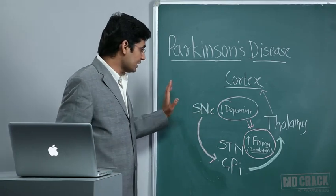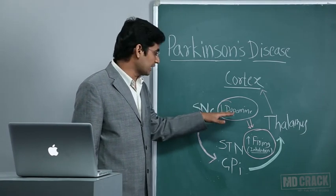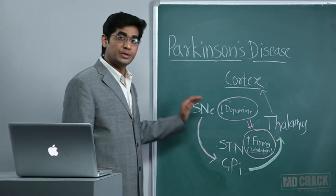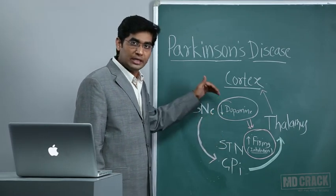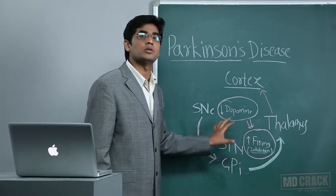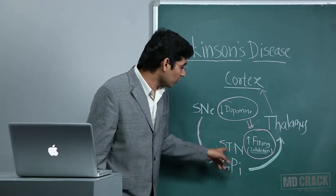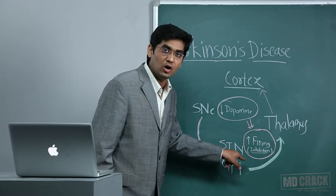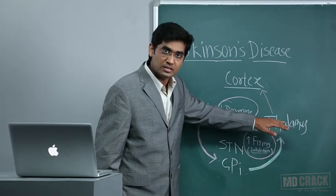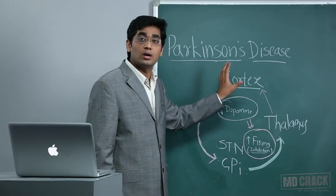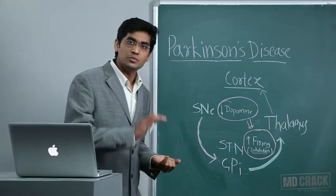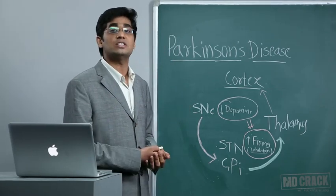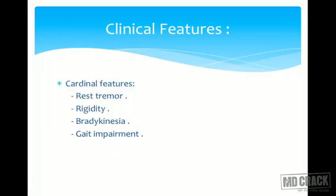On the board, the pathophysiology: the substantia nigra secretes dopamine, which normally controls the subthalamic nucleus and globus pallidus. Due to degeneration, decreased dopamine causes loss of control over these structures, resulting in increased firing from the subthalamic nucleus and globus pallidus. These are inhibitory neurons, so their increased firing inhibits the thalamus, which decreases motor cortex activity, leading to bradykinesia, gait difficulty, and resting tremors.